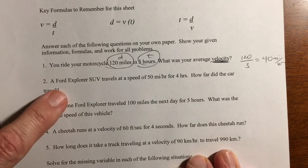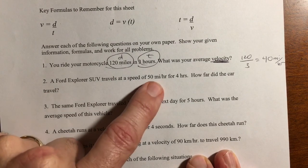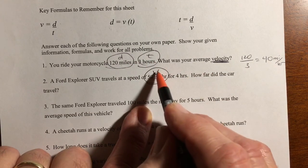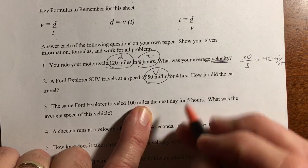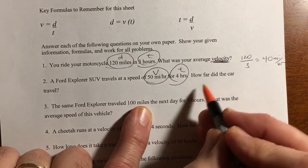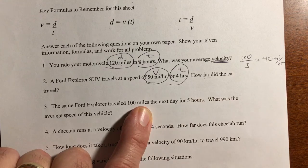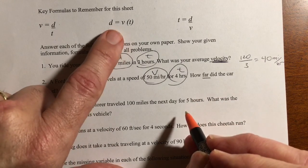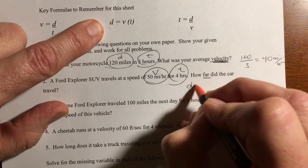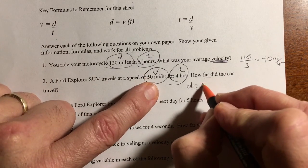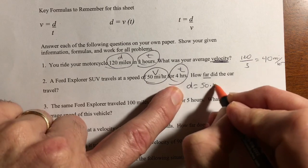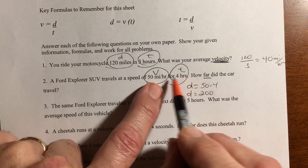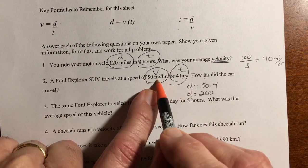Number two, a Ford Explorer SUV travels at a speed of 50 miles an hour. That's a velocity. I'm circling the variables, putting the variable that goes with it for four hours. That's time. How far, that's distance, did the car travel? So I'm trying to find D, distance. So it's going to be distance equals velocity, 50, times four. The distance equals 200. And the units right here, the hours are going to cancel out. So what's left is miles.